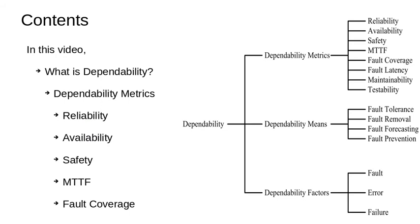This video is very important for undergraduate, graduate and postgraduate research students. In this video we will talk about what is dependability. The dependability tree diagram is shown here, in which there are 3 main branches: dependability matrix, dependability means, and dependability factors.